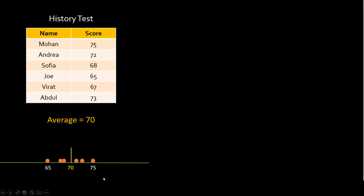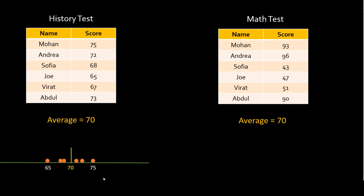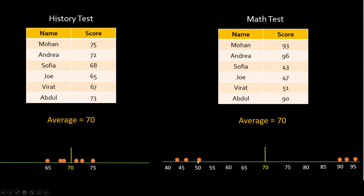What we're trying to learn is how far apart the individual data points are from the average, or how spread out the data points are with respect to the average. You can have a different data set — let's say scores from a mathematics test — and those scores might look like this. Again the average is the same, but when you plot them on a chart you will find that the data points are quite spread out, quite far away from the average. In statistics and data science it helps if you can figure out how far apart individual data points are from the average.